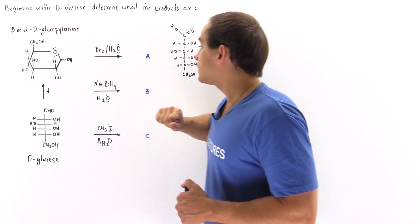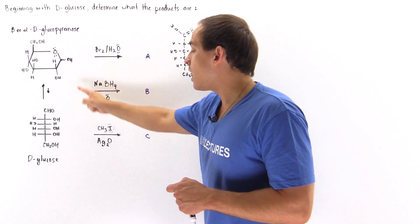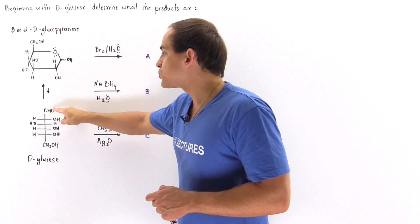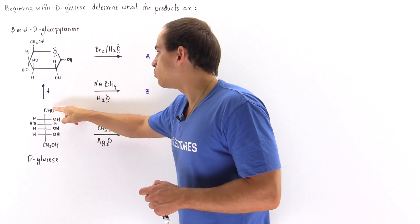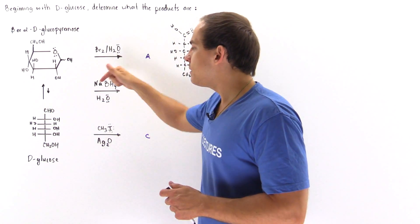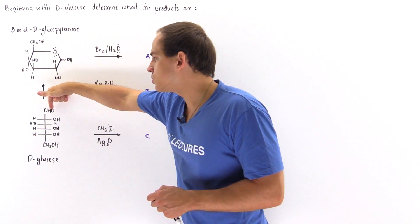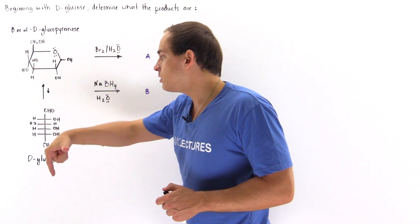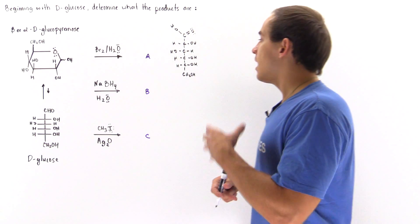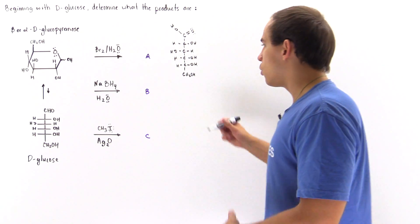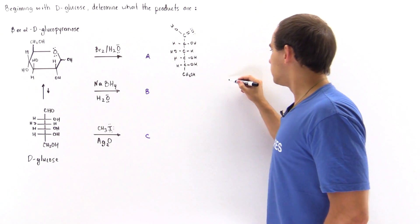So that means this sodium borohydride will reduce this aldehyde group, and then the water will basically protonate the oxygen to transform our carbonyl group into a hydroxyl group, an alcohol group. So the product will look like this.